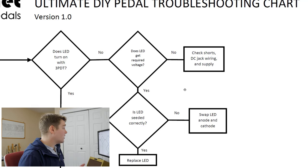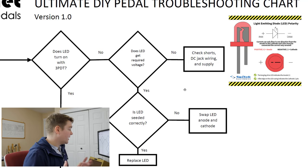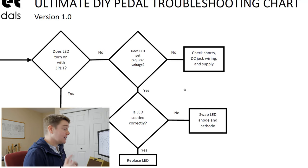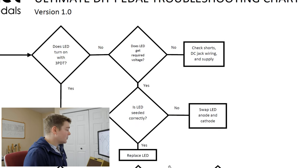If we do get that required voltage, the next thing we need to look at is whether our LED is seated correctly — do we have the anode in the right spot, the cathode in the right spot? Your anode is your long leg of your LED. If that's not put in there properly, you're going to need to swap the LED anode and cathode. If you're getting the required voltage and the LED is seated correctly, then you likely have a broken LED and you need to replace it — take your solder sucker out, remove that LED, put in a new one.